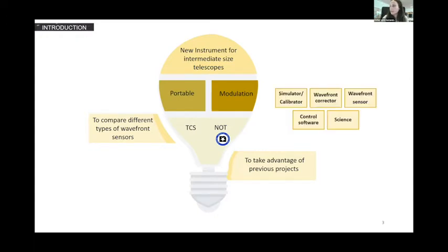We divide the prototype in five different parts: simulator calibrator for different testing labs, wavefront corrector, wavefront sensor, control software, and science. This approach also allows us to make a comparison of different wavefront sensors in different terms, such as the atmospheric condition, the observational target of the telescope which we work. The base of this prototype is to use resources of previous projects.